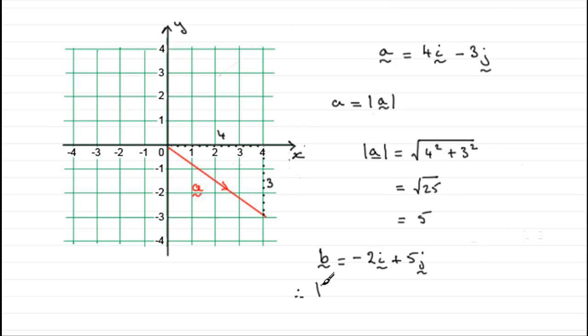Well, the magnitude would simply be the square root of the sum of the squares of the components, 2 squared plus 5 squared. And so here we've got 4 plus 25, which is 29, and it would be root 29. And I would leave it like that because it doesn't square root very nicely.